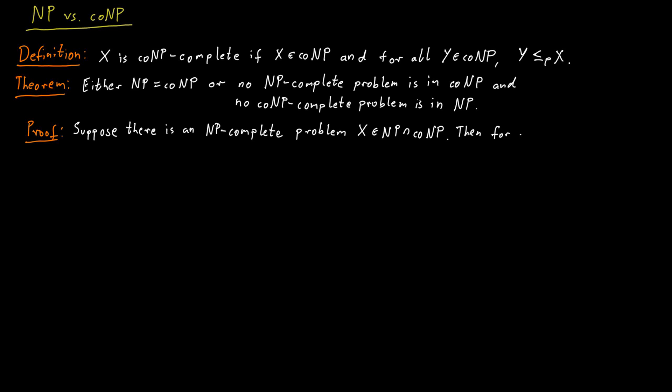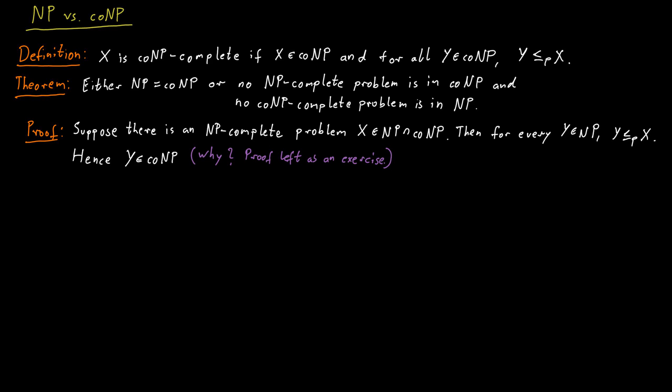But then take any problem Y from NP. We know that Y polynomial-time Karp reduces to X because X is NP-complete. It is also true that if a problem Y polynomial-time Karp reduces to X for a problem X that is in co-NP, then Y is also in co-NP. This is a good exercise — try to prove this yourself. I'm not going to prove it right now, but just trust me that this statement is true.